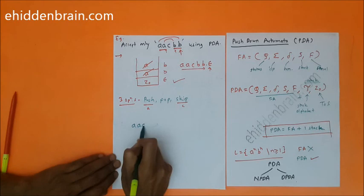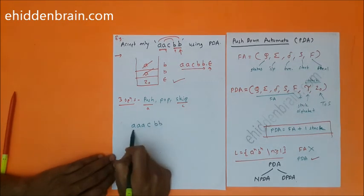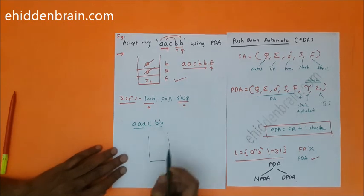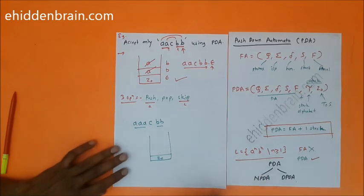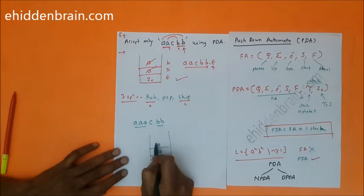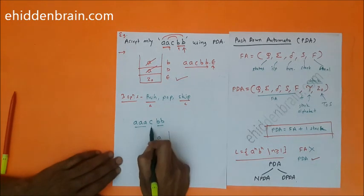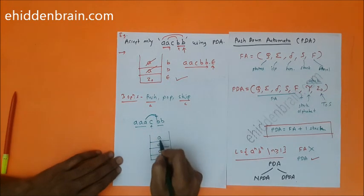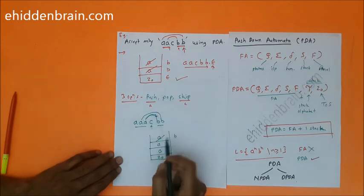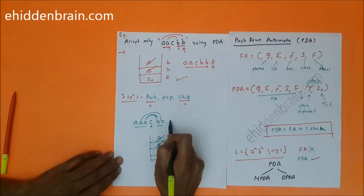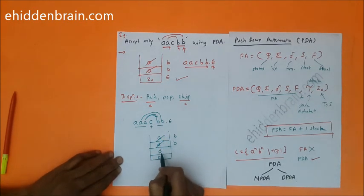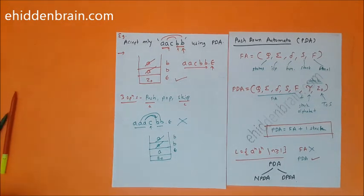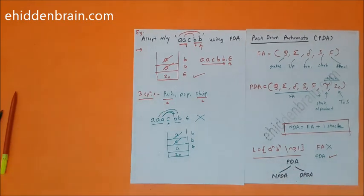Now let's verify a non-valid string: 'aaacbb', where number of a's and b's don't match. For the three a's I push all three; for 'c' I skip; for the first 'b' I pop one 'a'; for the second 'b' I pop another 'a'. Now epsilon is the input but 'a' is still top of the stack — not z0 — so there is a problem and this string will not be accepted.